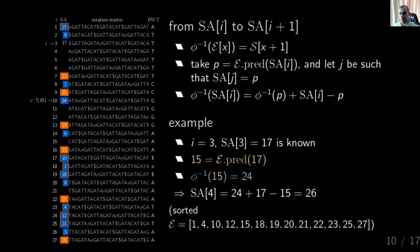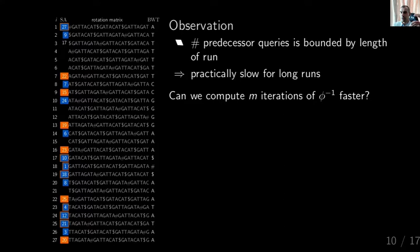The observation is that whenever you go down, you need a predecessor query. If you have a long run and you're in it wanting the suffix array entry, you have to start at the beginning of the run and go all the way down. The number of predecessor queries is bounded by the length of the run. If this run is long, it could take a long time. So the question is: can you make the iterative process of phi inverse calls faster — if you have m iterations of phi inverse, can you compute it faster?